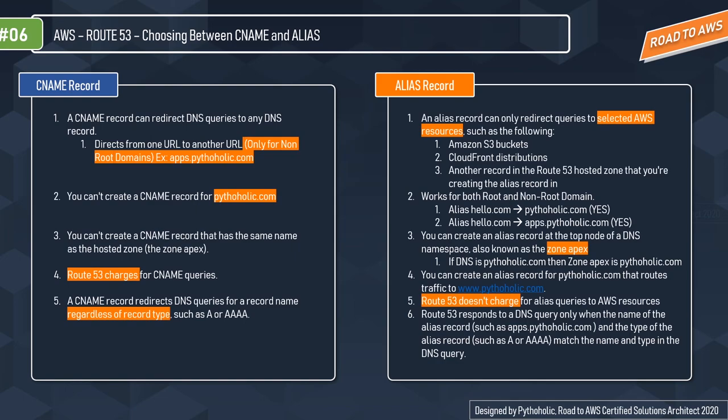Route 53 charges for CNAME queries. A CNAME record directs DNS queries for a record name regardless of record type — such as A or AAAA. For Alias records, an Alias record can only redirect queries to selected AWS resources such as Amazon S3 buckets, CloudFront distributions, or another record in the Route 53 hosted zone. Alias records work for both root and non-root domains — for example, you can alias hello.com to pytholic.com or to apps.pytholic.com.